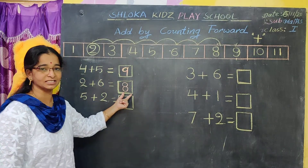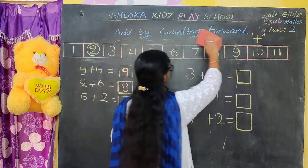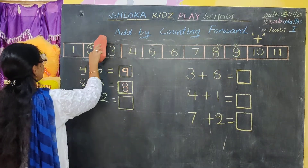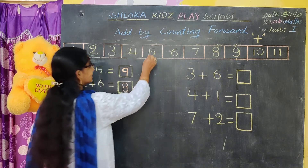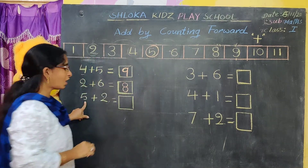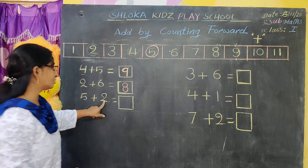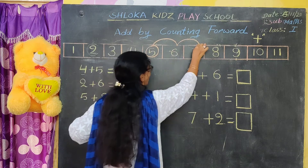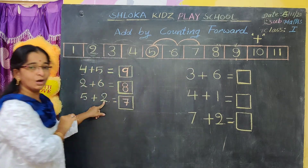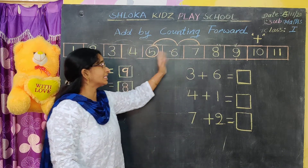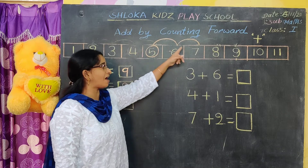Like this you have to do the additions. Now understood, everyone? One more next problem. First we will do the counting forward, and then again the addition method. How much is this? Five. Okay, this is five. How much counting forward we have to go? We have to count forward by two numbers. Five after: six, seven. How many numbers we have jumped? Two numbers. So the answer we got is seven.